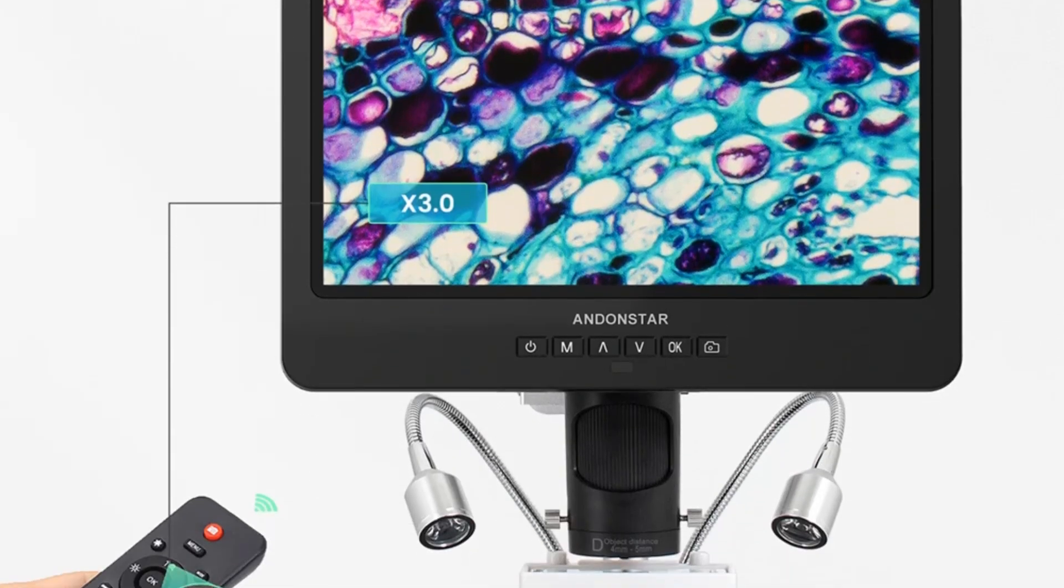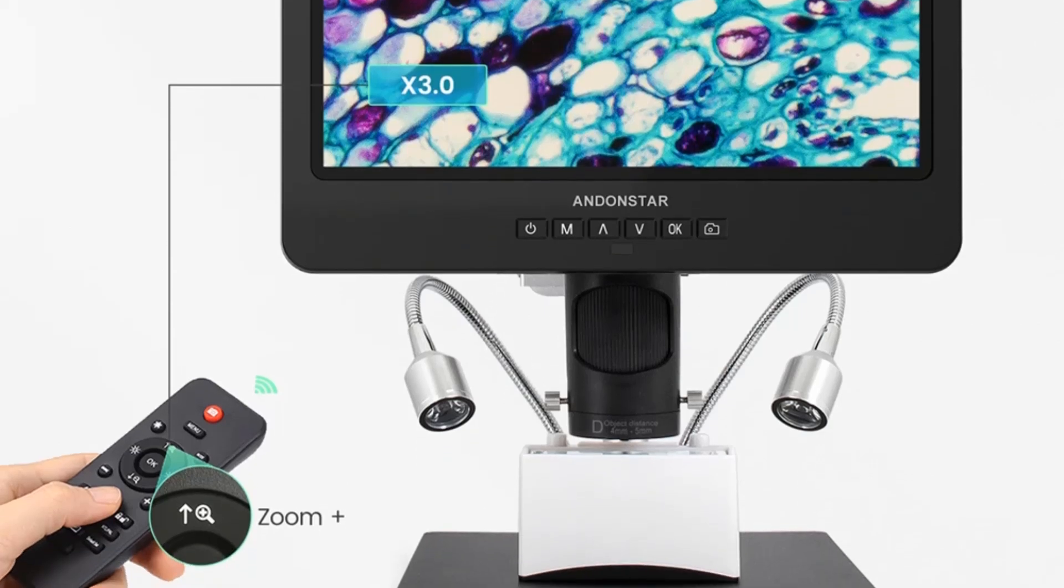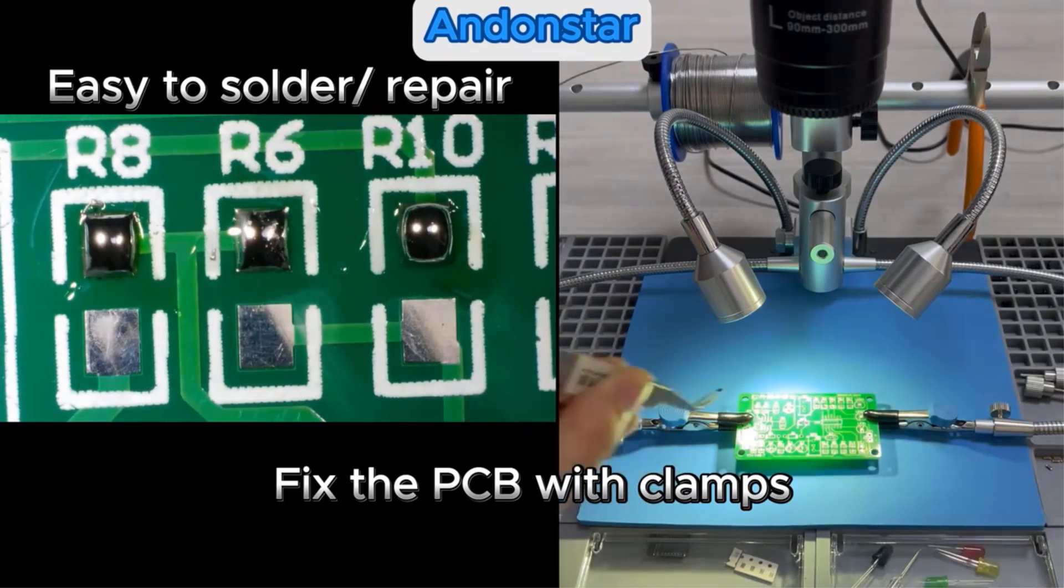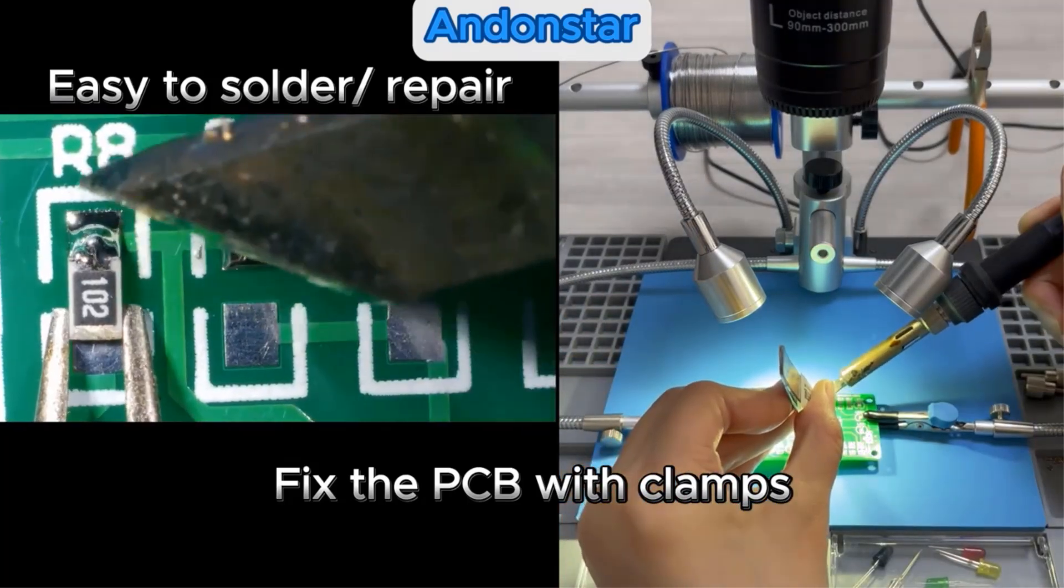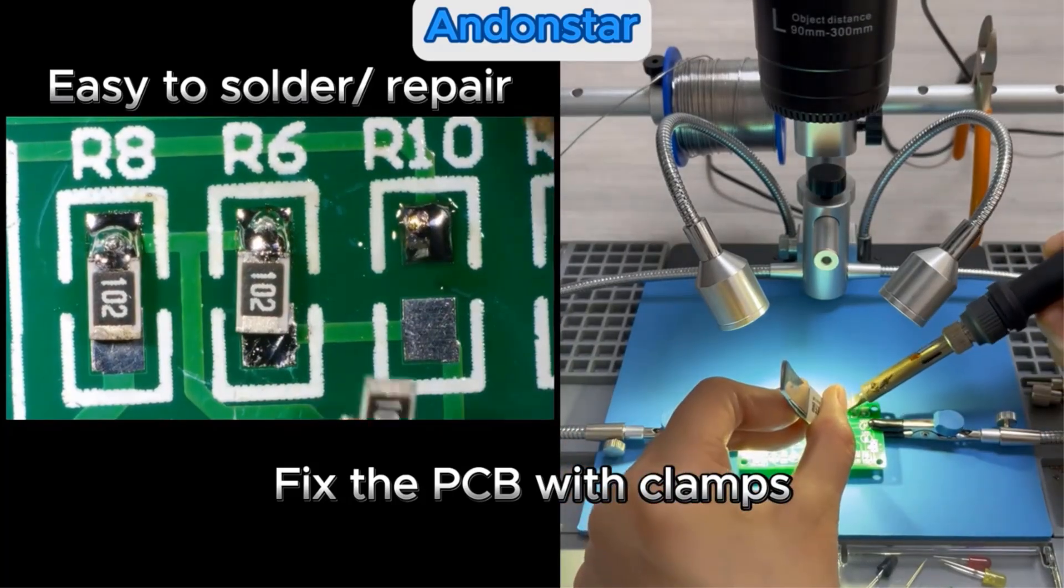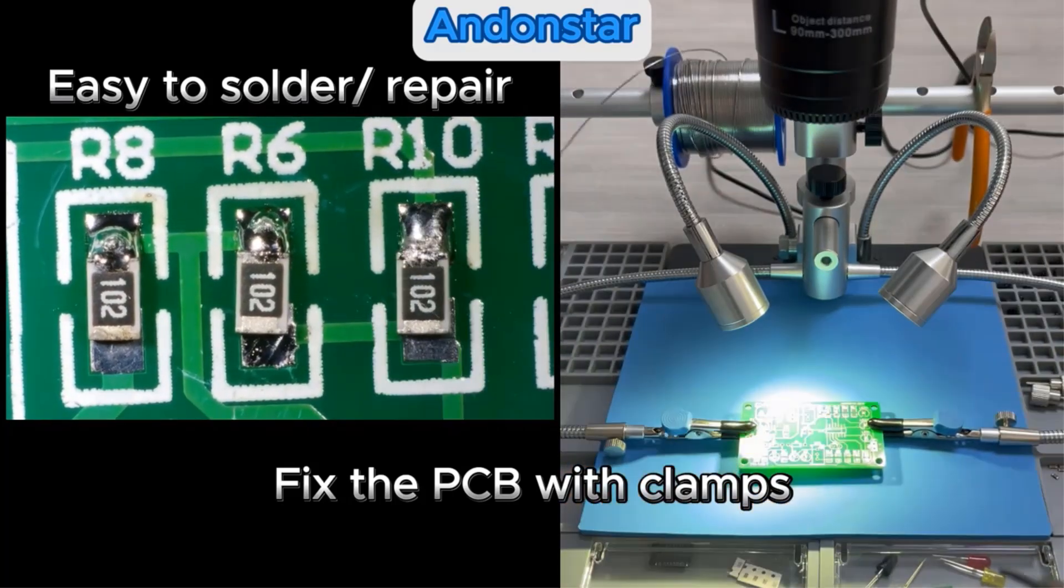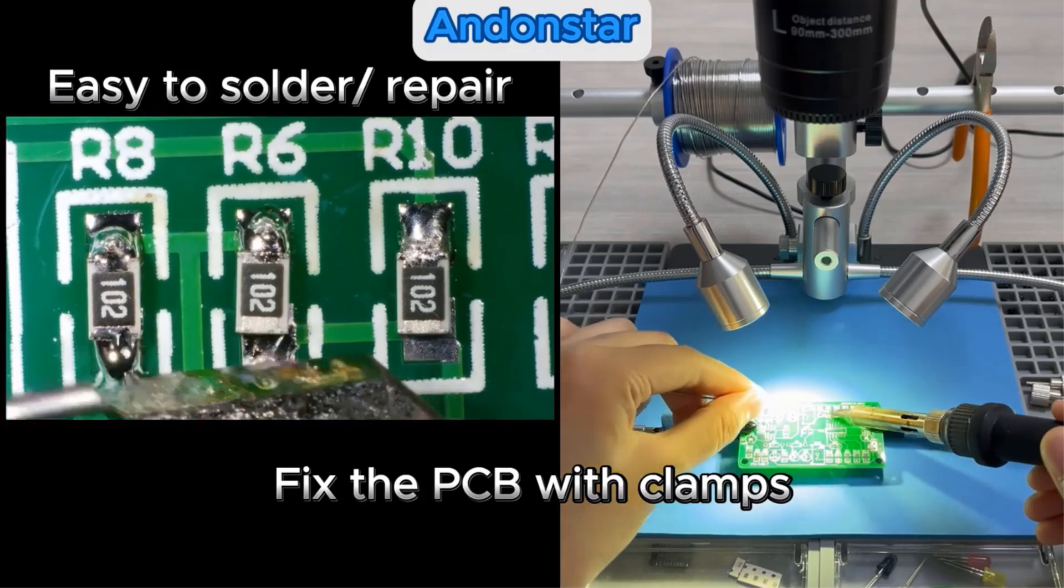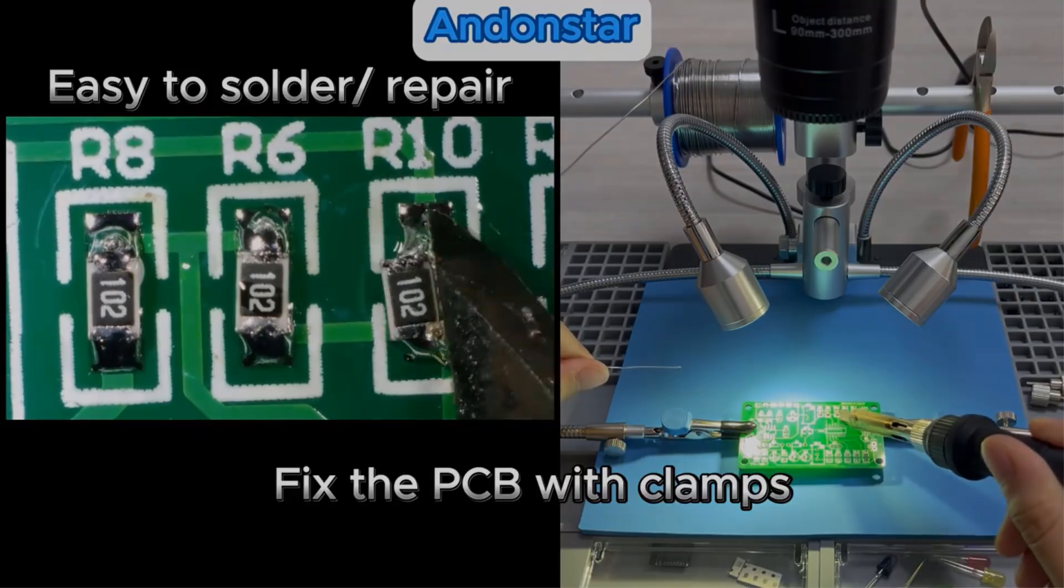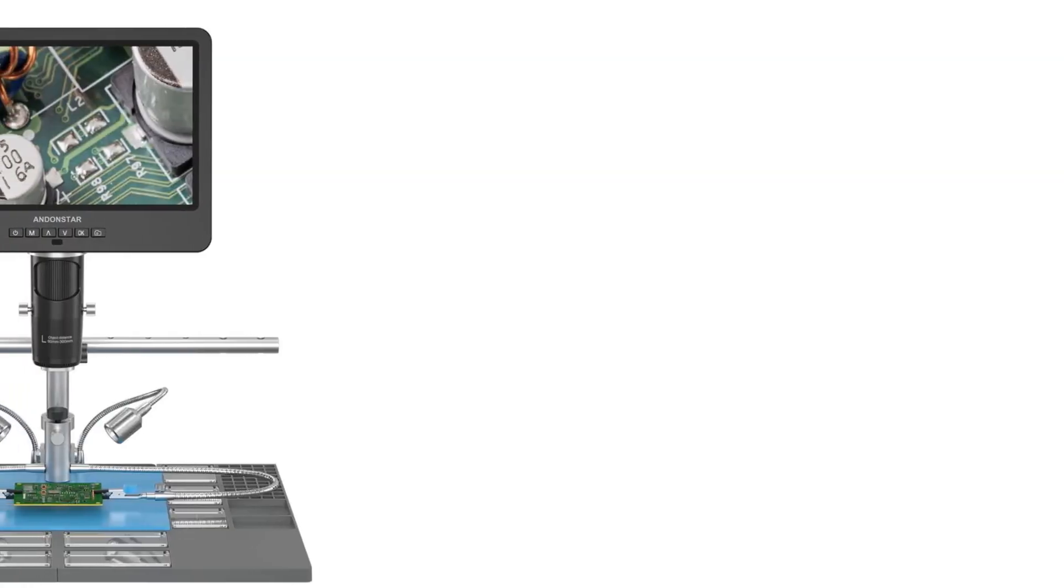It boasts a 4-megapixel imaging sensor, providing video output in UHD 2880x2160 at 24fps, as well as different HD resolutions, and captures photos at a maximum resolution of 4032x3024. The device supports video and photo formats such as MP4 and JPG, respectively, with storage capabilities through a microSD card, up to 32GB.